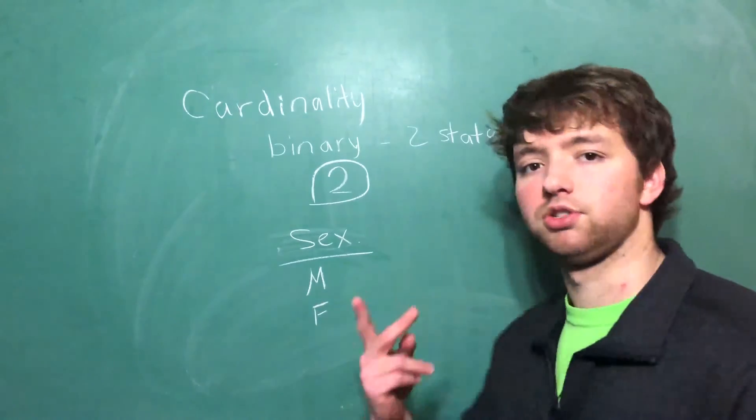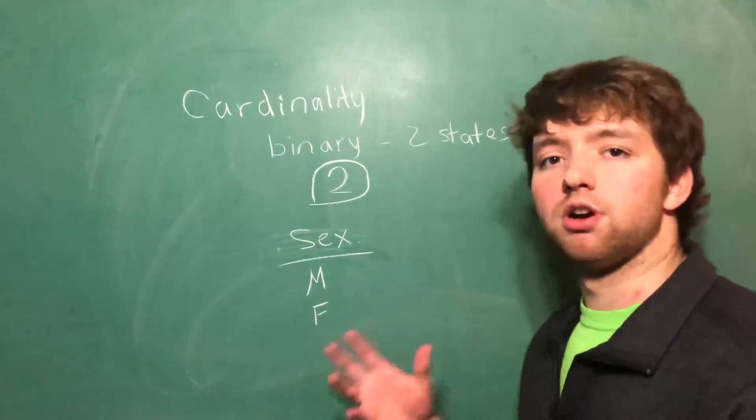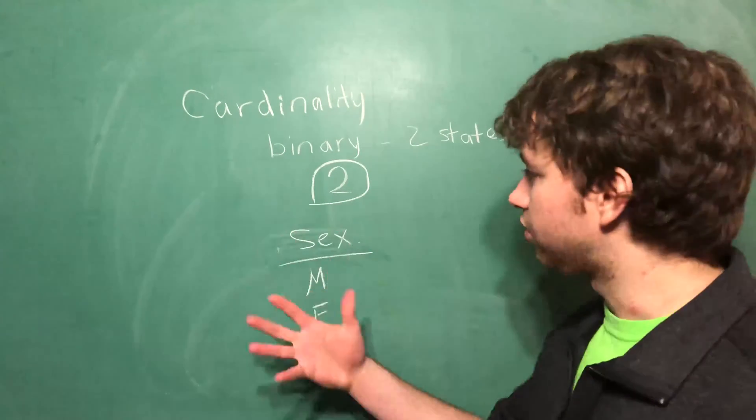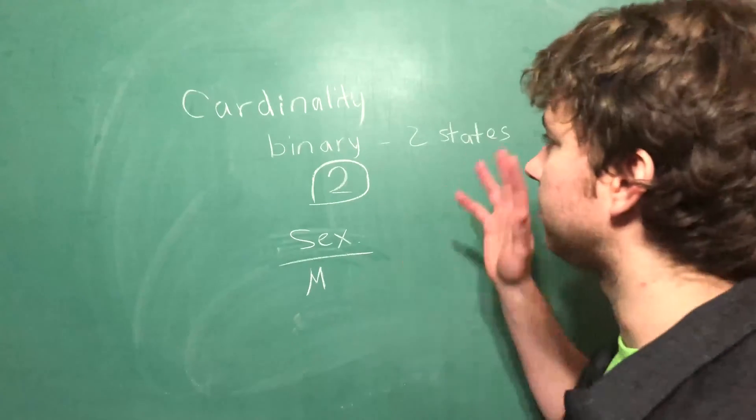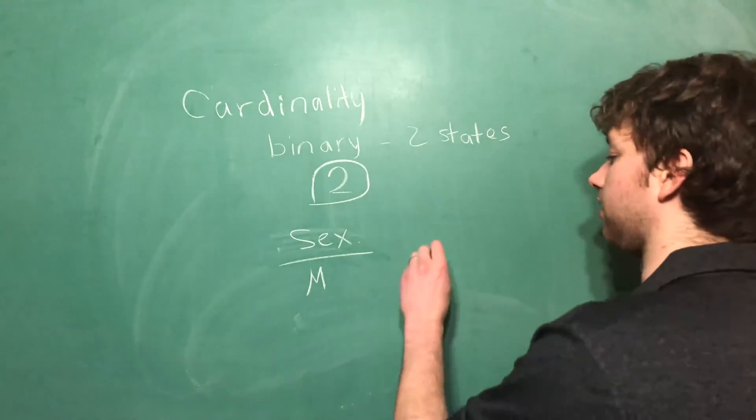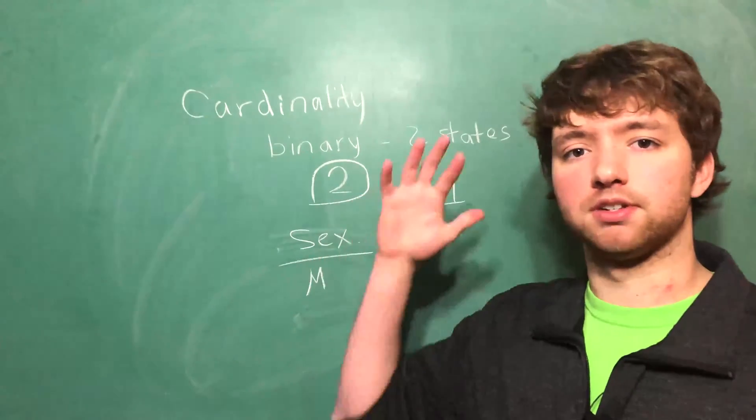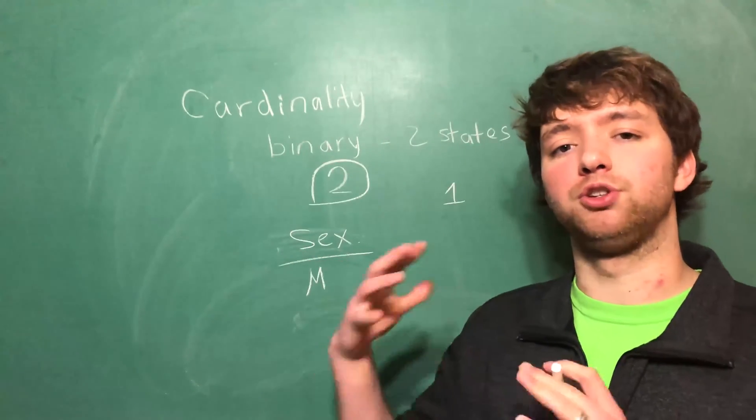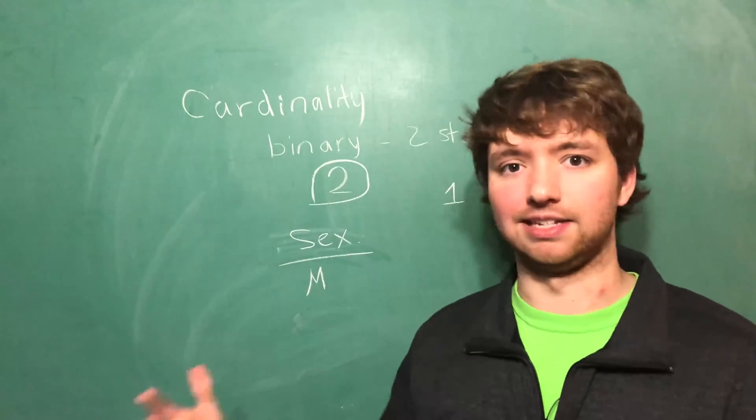This is binary because there's only two options. Now if we are counting the cardinality of a particular feature in our data set and everybody's a male, we would say that this feature has a cardinality of one and it's no longer binary. That's because every single row has that value so you can think of the other value not existing.